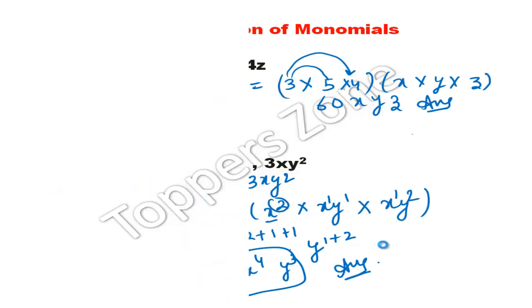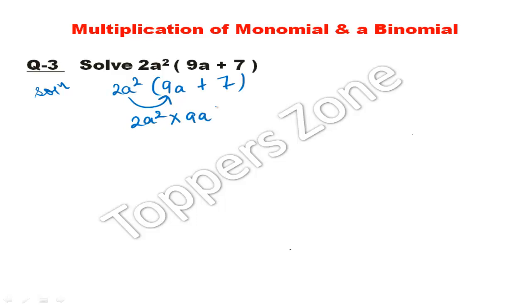Next is multiplication of monomial and binomial. We'll solve 2a²(9a + 7). 2a² into 9a plus 7. We multiply: 2a² into 9a plus 2a² into 7.